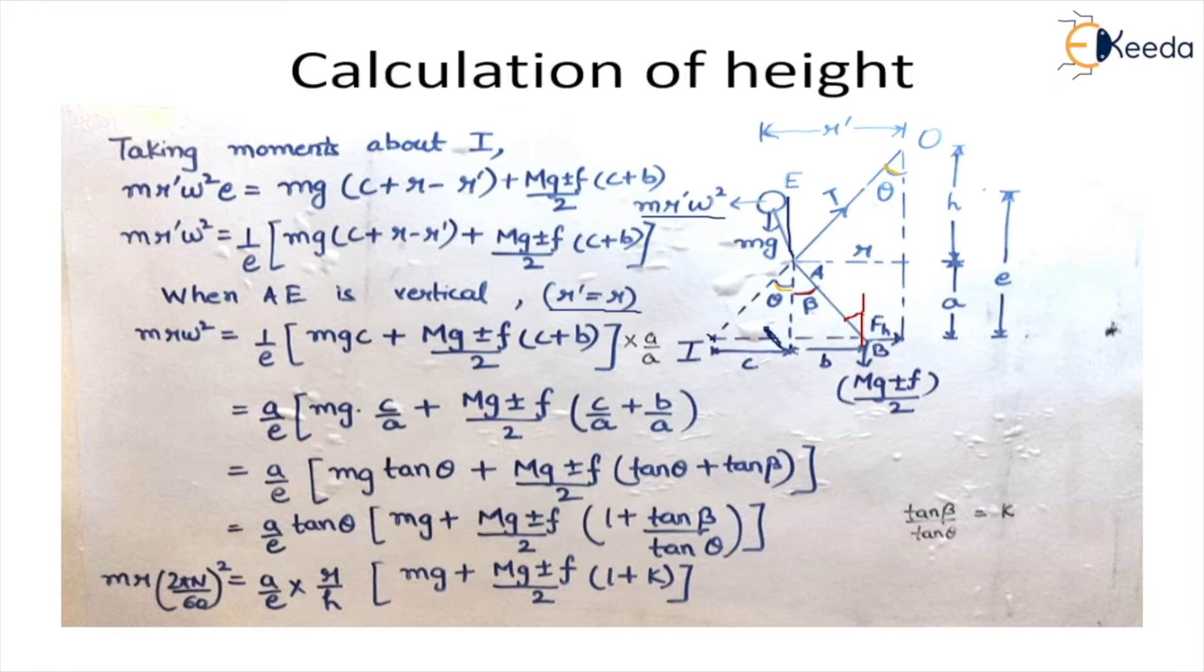Now in this triangle if you see, tan theta is what? C upon A. So C upon A is replaced by tan theta and here also. If you look in this triangle tan theta is what? B upon A. So B upon A is replaced by tan theta and we already know that tan theta upon tan beta is K.